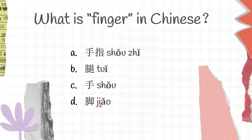Moving on to the next one: what is finger in Chinese? A, shǒuzhǐ; B, tui; C, shǒu; D, jiǎo. Shǒuzhǐ is finger, tui is leg, shǒu is hand, jiǎo is foot. And the correct answer for this question is A, shǒuzhǐ.